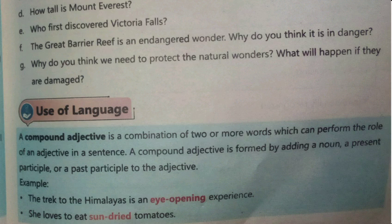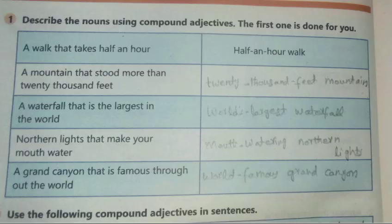مثال: 'eye-opening experience' — یہاں compound adjective ہے 'eye-opening'۔ 'Sun-dried tomatoes' — یہاں 'sun-dried' compound adjective ہے۔ Compound adjective دو یا زیادہ الفاظ کا مجموعہ ہوتا ہے جو ایک جملے میں adjective کا کردار ادا کرتا ہے — 'eye-opening' نے noun 'experience' کو describe کیا، اور 'sun-dried' نے 'tomatoes' کو۔